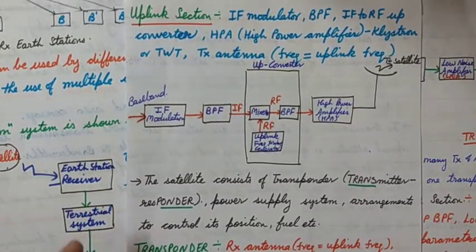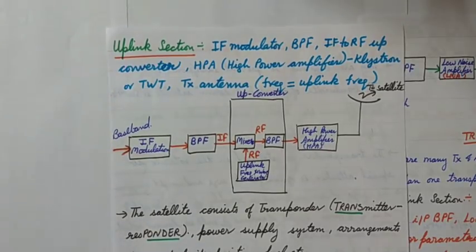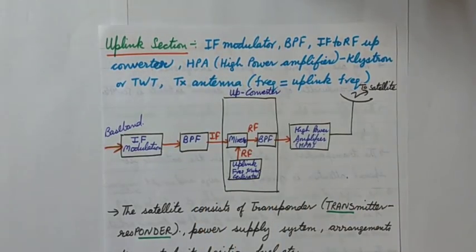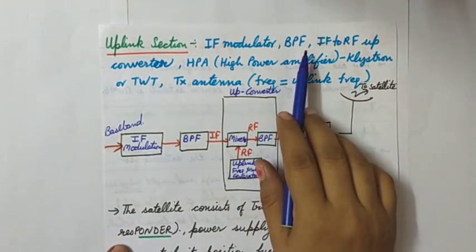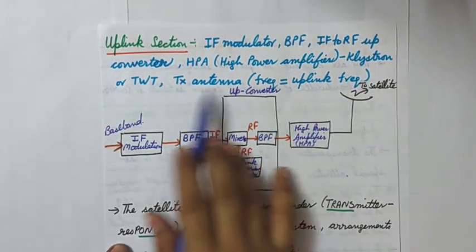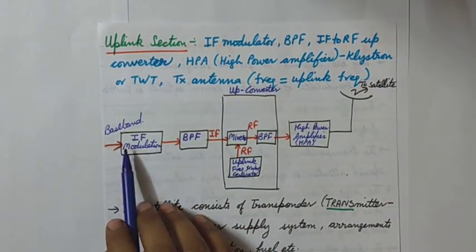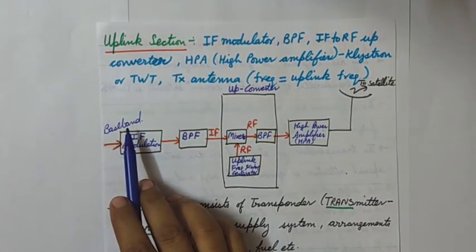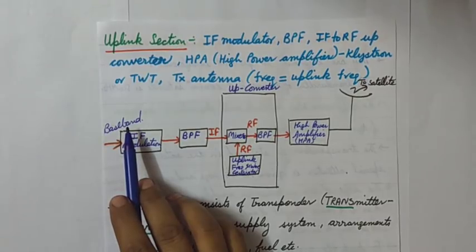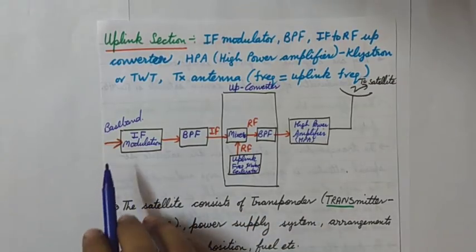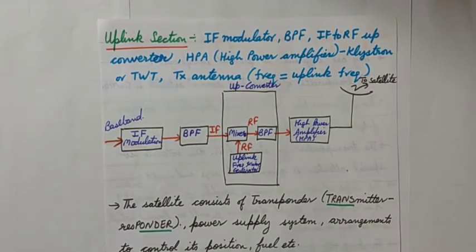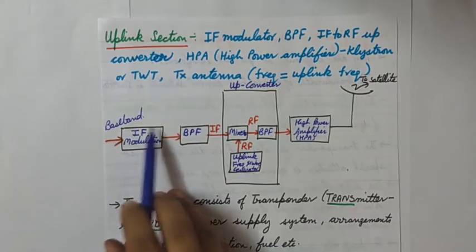First we will see the uplink section. In the uplink section there is an IF modulator, a bandpass filter (BPF), and an IF to RF up converter. I have drawn the block diagram here. The baseband signal — the signal the user wants to send — is given to the earth station transmitter, which is the uplink section. Inside this, the baseband signal is given to an IF modulator.